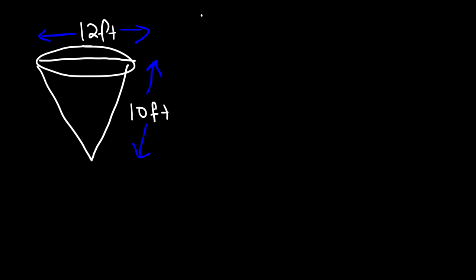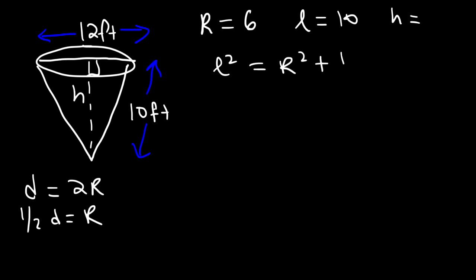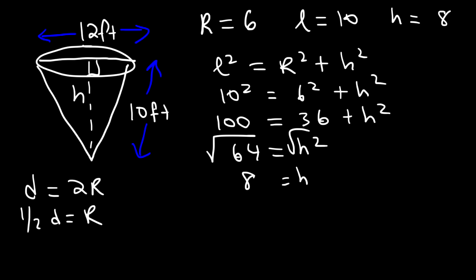First, find the radius: the diameter is twice the radius, so the radius is half the diameter — half of 12 is 6. Next, find the height using l² = r² + h²: 10 squared equals 6 squared plus h², so 100 minus 36 equals 64, and the square root of 64 is 8. The height of the cone is 8 feet.